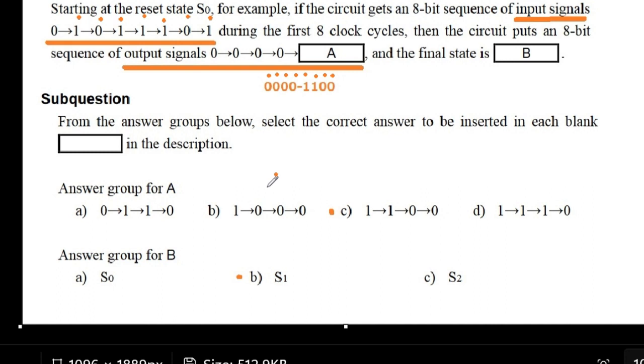It says here that for answer A, the answer group for A, we have here 1, 1, 0, 0, for letter C. So that's why that's the answer.